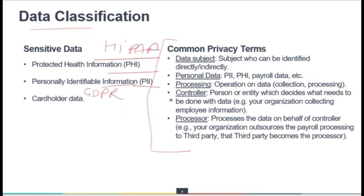The controller is the main entity who is collecting that data and can primarily be considered the data owner — they collect the data, they know what kind of data it is, what compliance they need to comply with, and accordingly they define policies to protect that data. The processor is the one who processes the data on behalf of the controller — for example, your payroll is being processed by an outsourced third-party company.